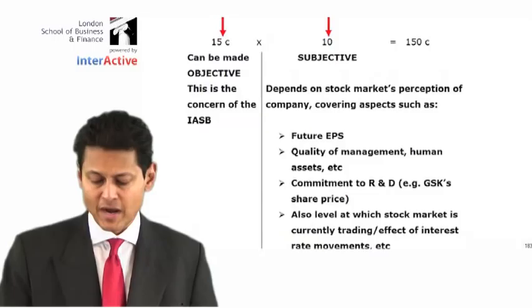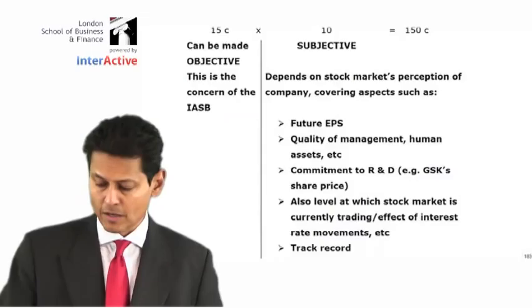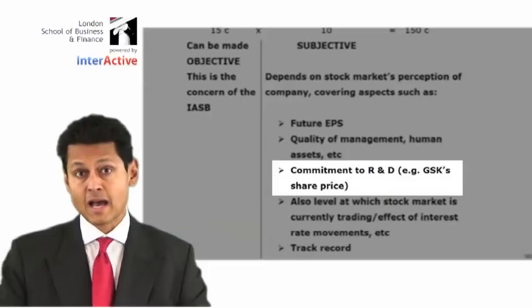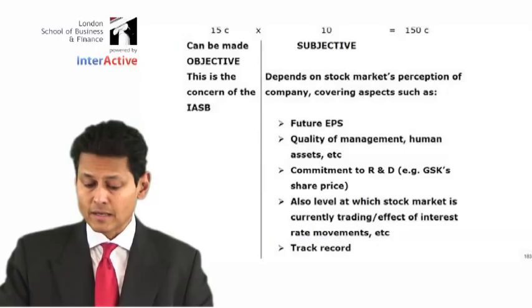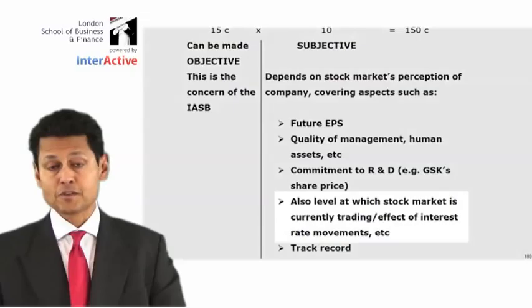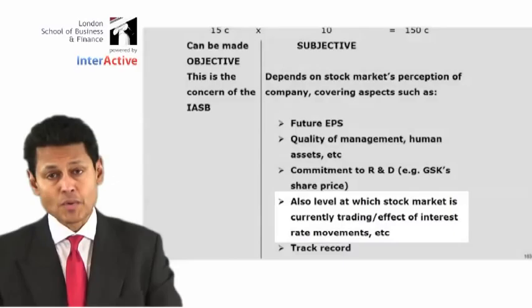The other reason of course is the price earnings ratio, which makes up the market value, is very subjective. As my note says, GSK — that stands for GlaxoSmithKline, the big R&D company. The other point I'd like you to look at is the level at which the stock market is currently trading and the effect of interest rate movements.